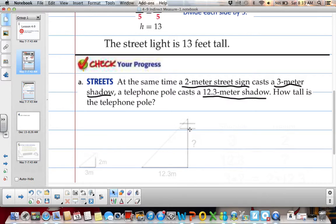So if you draw yourself a picture, we have our 2 meter street sign, and our 3 meter shadow. And then we have our telephone pole, which we're not sure how tall it is, and our 12.3 meter shadow. So we have our shadows corresponding to each other, and our street sign, and our telephone pole heights corresponding together.